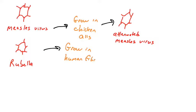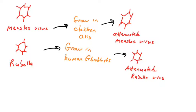Similarly, the rubella virus was taken from a person and grown in the laboratory. Rubella normally infects epithelial cells in humans, but in the lab it was adapted to grow in human fibroblasts — not its natural host cell type. Upon repeated passaging in those fibroblasts, it adapted through naturally occurring mutations. Scientists selected for mutants that grew well in fibroblasts but poorly in epithelial cells, eventually generating an attenuated rubella virus that does not cause disease in humans.